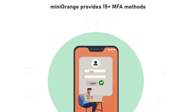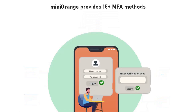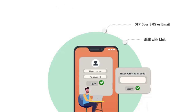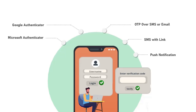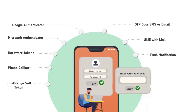Mini Orange provides 15 plus MFA methods like OTP over SMS or email, SMS with link, push notifications, Google Authenticator, Microsoft Authenticator, hardware tokens, phone callback, Mini Orange soft token, and many more.